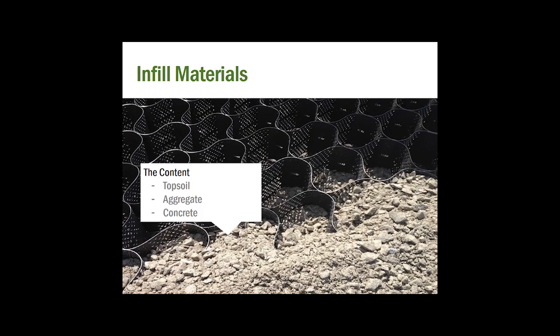The second main attribute of the GeoWeb system is the infill material. There are three main infill types for slopes depending on the type of protection needed: topsoil, aggregate and granular fill, and concrete. In most cases, the GeoWeb system allows for the use of on-site materials without the need to import fill.